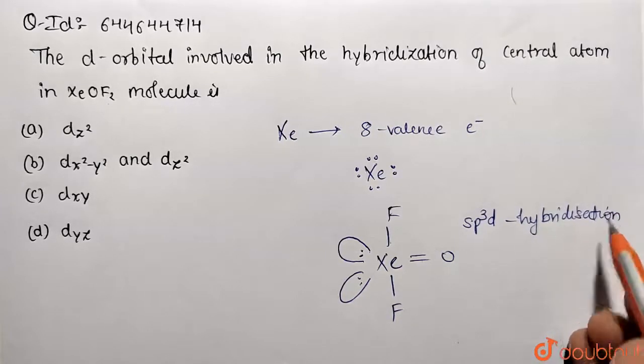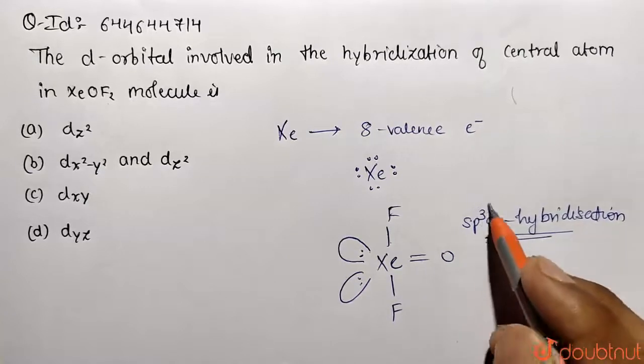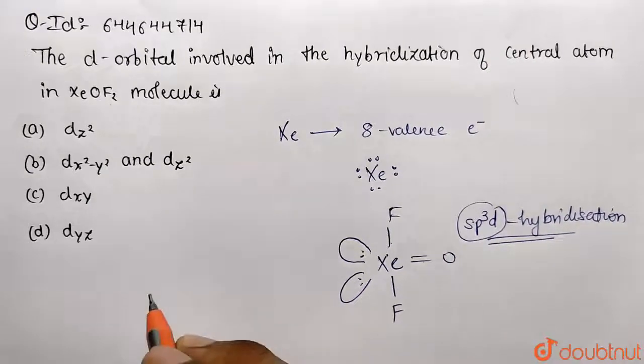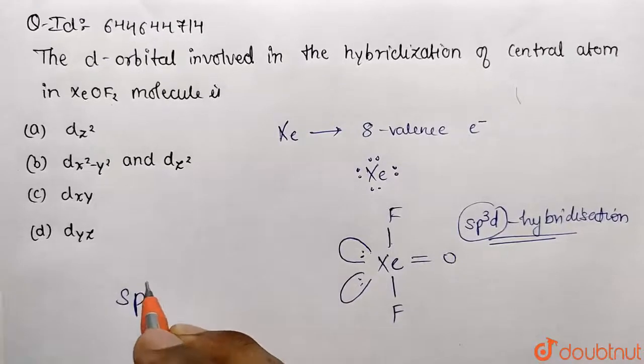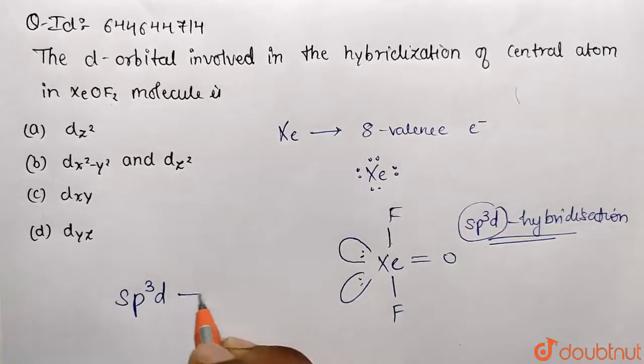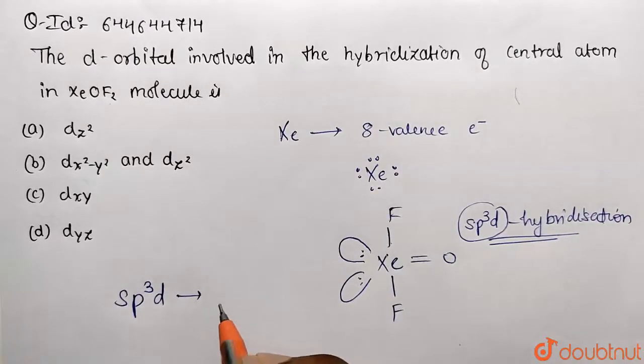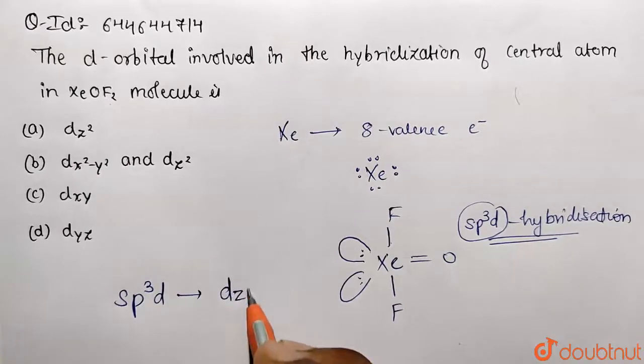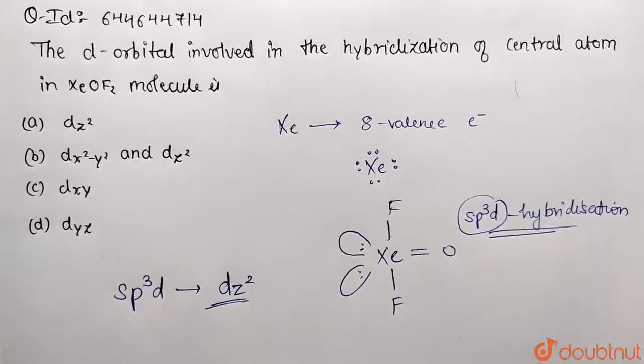Now you know that when hybridization is going to be of sp3d type, which d orbital is actually taking participate? So the orbital which is taking participate is dz square. So dz square is involved.